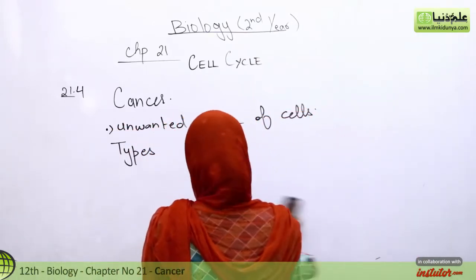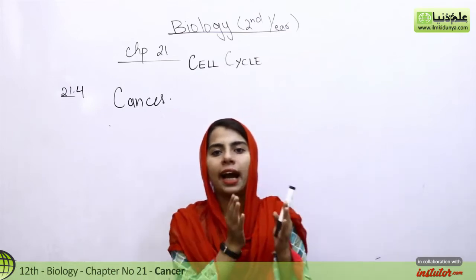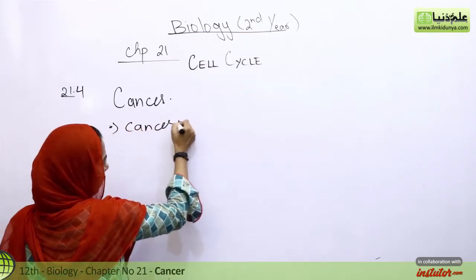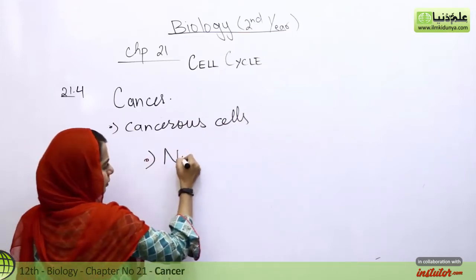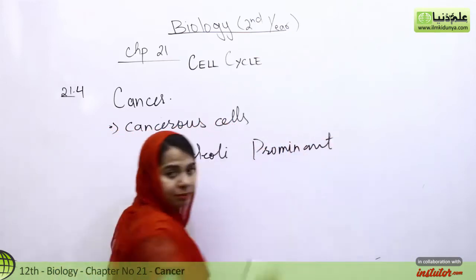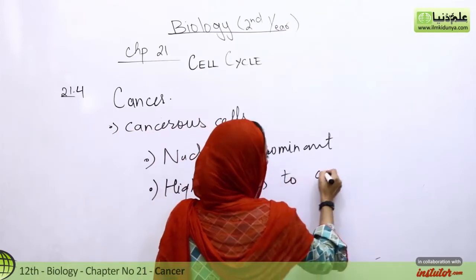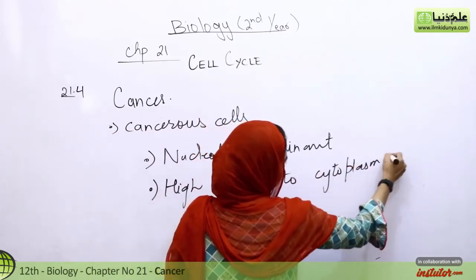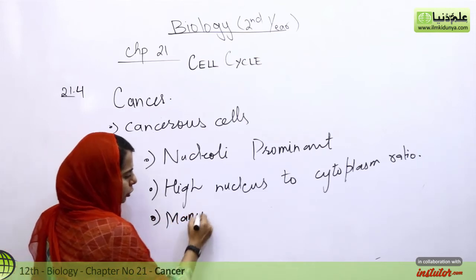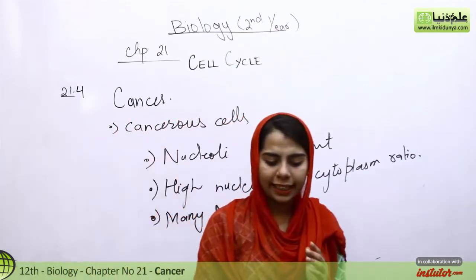What is the difference between normal cells and cancerous cells? When cancerous cells are present, the nucleoli are very prominent — the dark part of the nucleoli is very prominent. They have a high nucleus to cytoplasm ratio, plus many mitosis — uncontrolled mitosis is occurring.